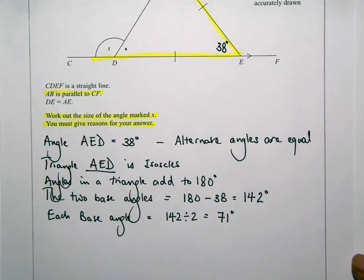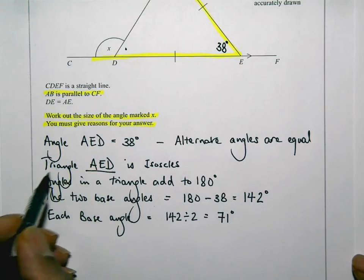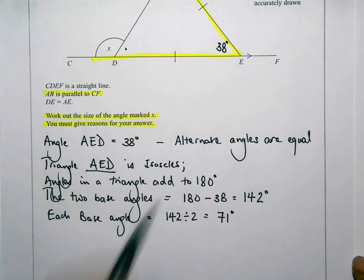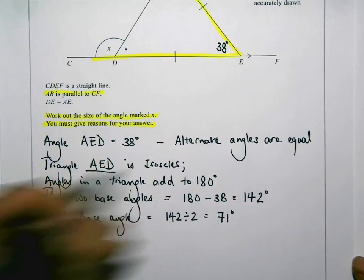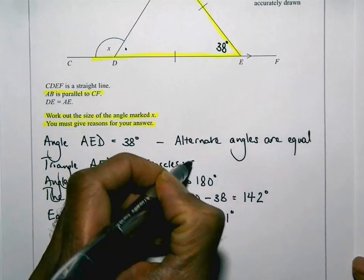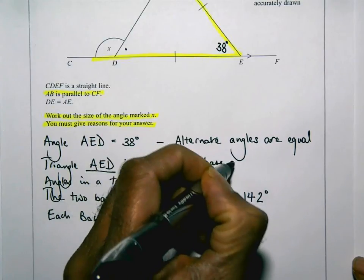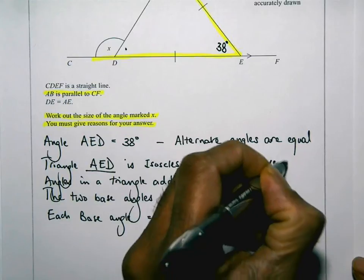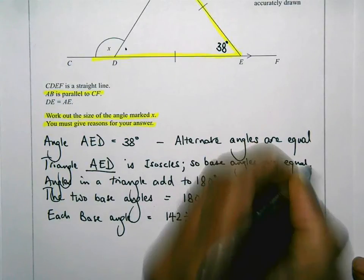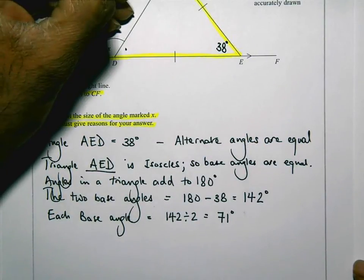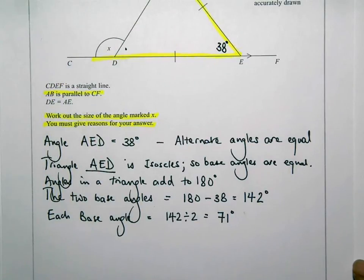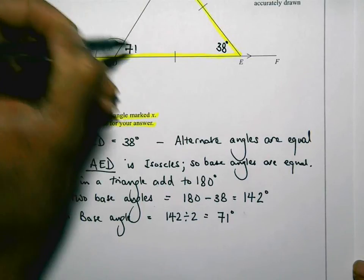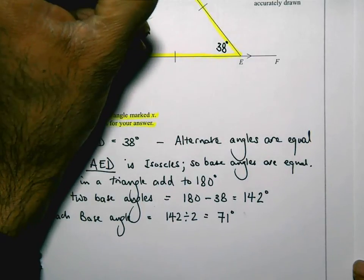Okay, so triangle AED is an isosceles. I'm going to go back there and put the reason: base angles are equal. Okay, so those two angles that I've indicated there in the question, both of them are equal. And in fact, both of them are going to be 71 degrees, 71 degrees. And I've just marked them both in the diagram.